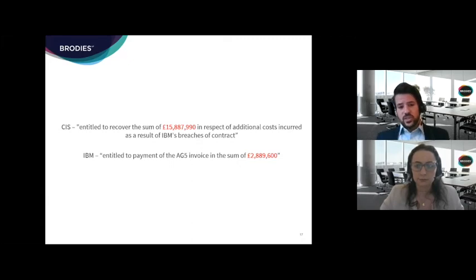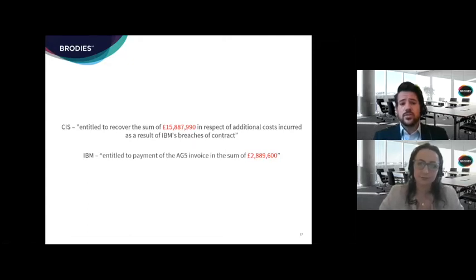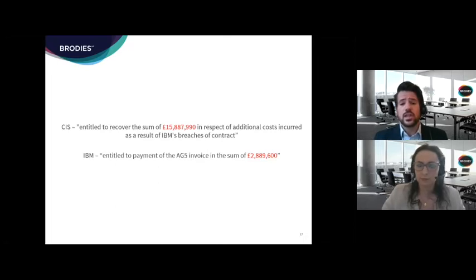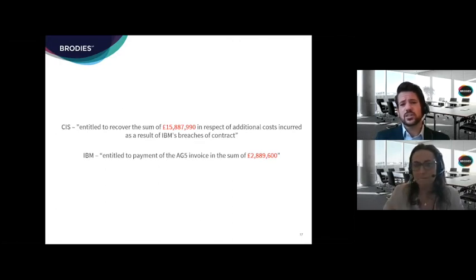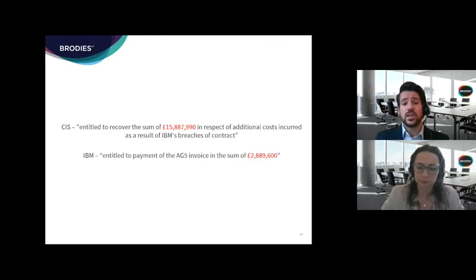Some takeaway points from this case: payment in respect of a milestone clearly cannot be withheld due to failures in respect of other milestones if there is no provision for this in the contract. The case also illustrates the importance of observing the procedures set out in the contract. Here, CIS had validly and in good faith disputed the invoice, even though the reason for doing so was ultimately not accepted and the invoice was payable — and as a result, IBM didn't have the right to terminate the contract. Similarly, IBM had sought to attribute faults and failures to CIS, but was unable to do so because it had not served the relevant relief notices on CIS.